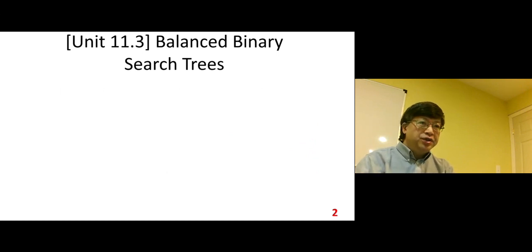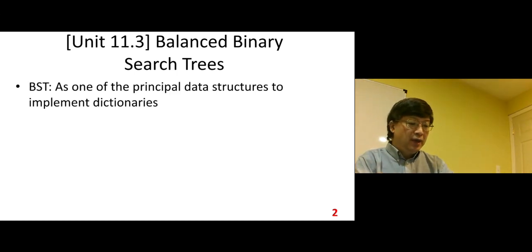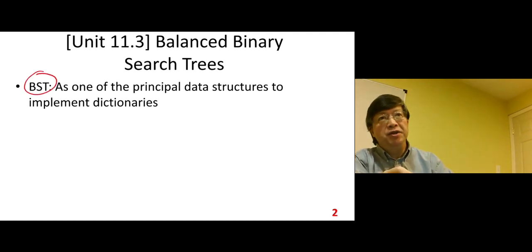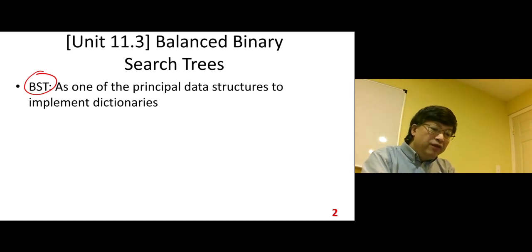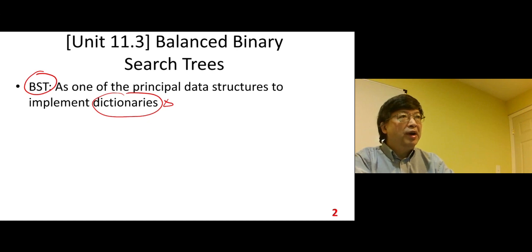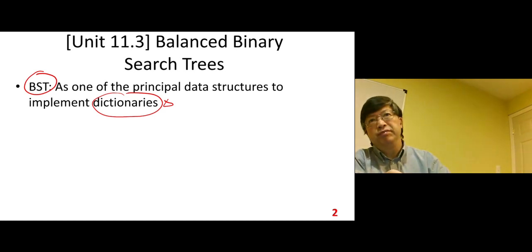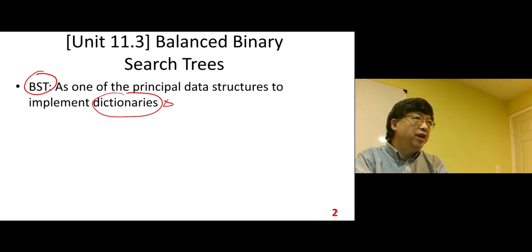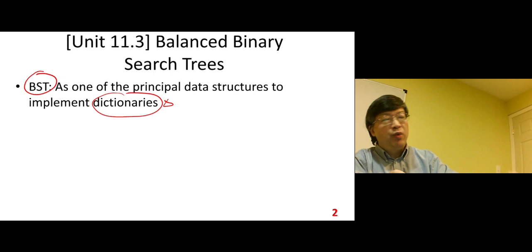Balanced binary search trees. How do we make a binary search tree balanced? Here in the applications, this data structure is very useful in real world applications. As one of the principal data structures to implement dictionaries, we need a dictionary data structure to organize our data for searchable property so we can search and find it fast. How do you find a word in a dictionary? You can find it very fast. That's the property we need for this BST.